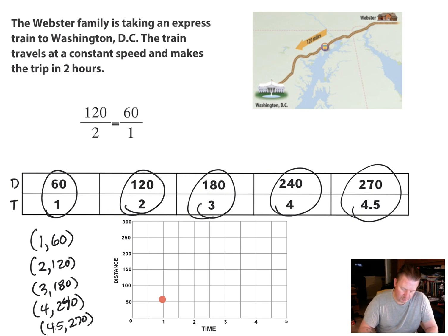All right. So the next ordered pair is 2, 120. So I come over here to 2. And once again, I got 100. And I got 150. But there's no 120 on here. So it's somewhere between 100 and 150. 125 would be about halfway. So it's going to be below halfway again. So we're going to say that it's going to fall about right there.